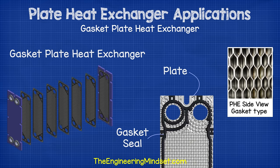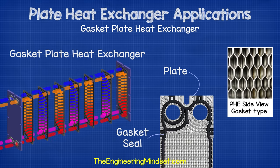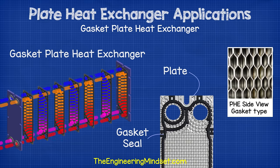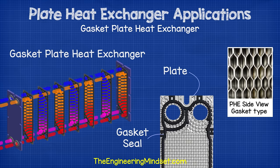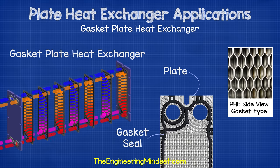Gasket type heat exchangers consist of multiple sheets of thin metal arranged to create channels. The gaskets sit between each of the plates and form a seal, preventing the fluids from mixing and leaking, and they dictate which channels each fluid can flow through. Gasket plate heat exchangers can increase or decrease their heating or cooling capacity by adding or removing internal plates, and they can also be dismantled for cleaning and maintenance. The plates are typically made from stainless steel, sometimes titanium, the end plates are usually mild steel, and the gaskets are usually made from rubber.